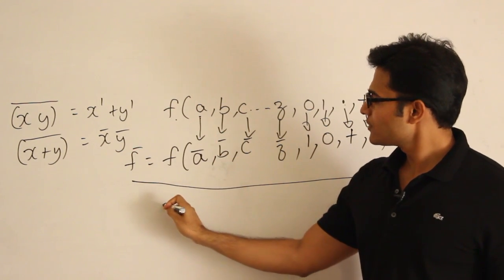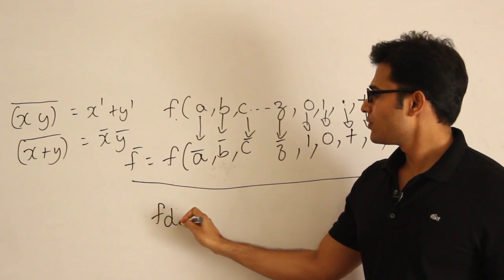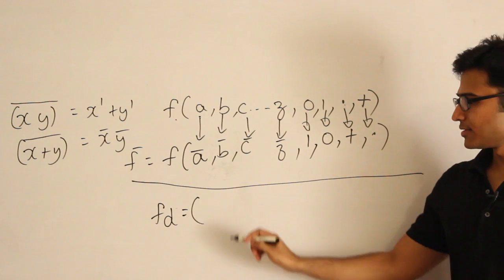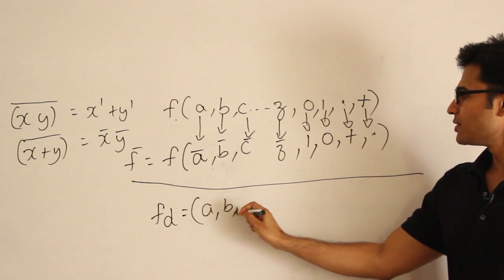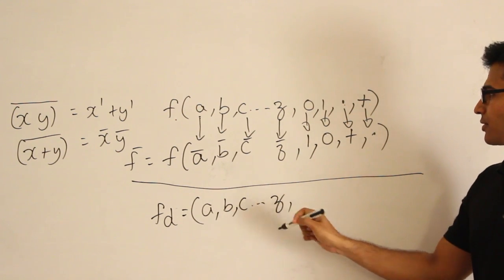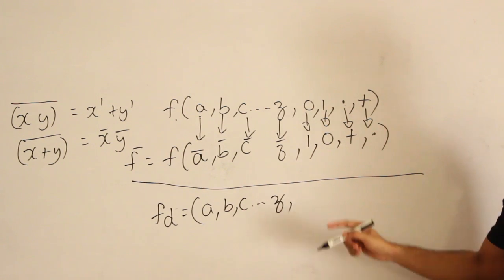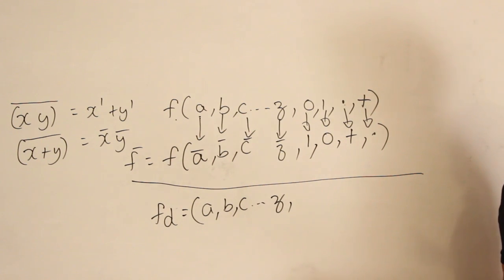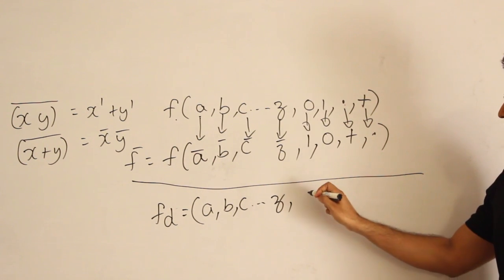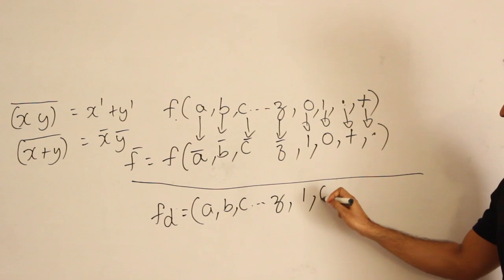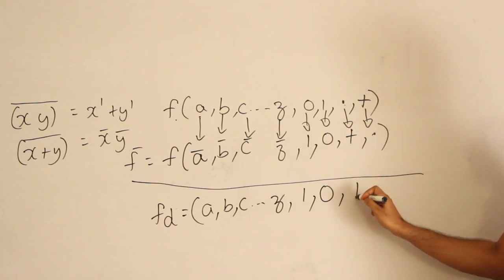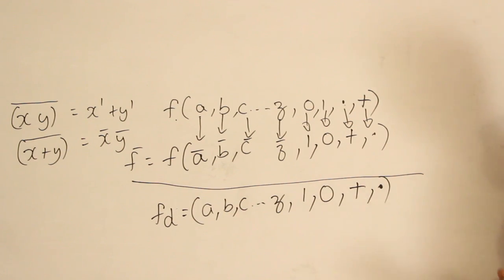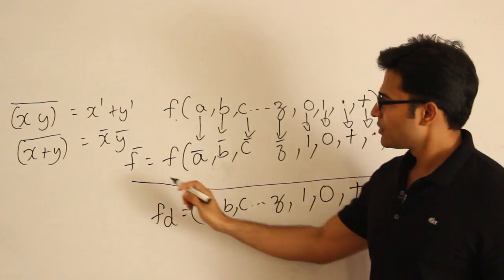If f is the original expression, then what is the dual of f, let's call it fd? Duality means: leave the literals a, b, c through z as they are. The constants have to be modified — replace 0 with 1 and 1 with 0. Replace dot with plus and plus with dot.